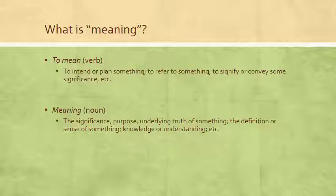When we're interpreting literature, we're always looking to communicate what the literature means. But what does meaning mean? When used as a verb, to mean can be to intend or plan something, to refer to something, to signify or convey some significance, to represent some idea or other thing. And the noun meaning is defined as the significance, purpose, or underlying truth of something; the definition or sense of something; the knowledge or understanding of something.